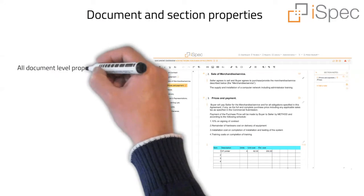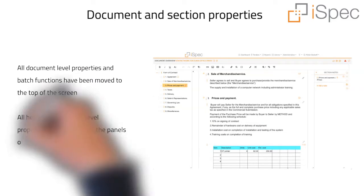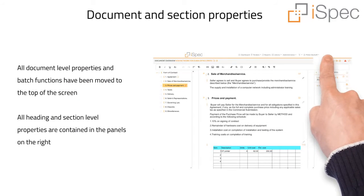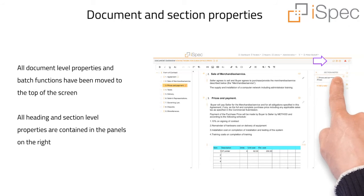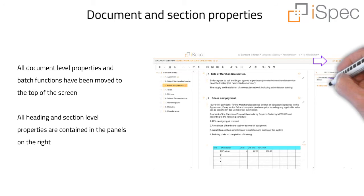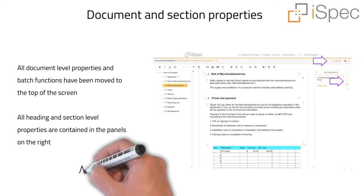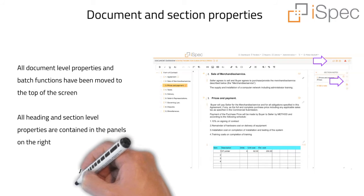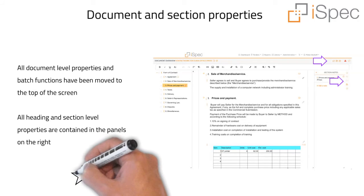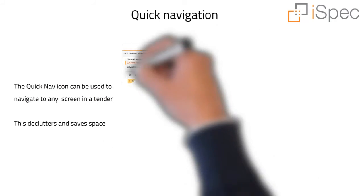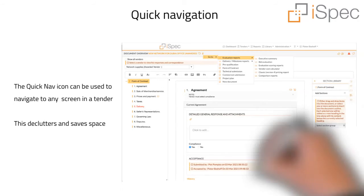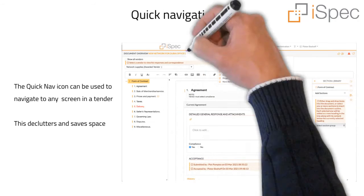All document level properties and batch functions have been moved to the top of the screen. All heading and section level properties are contained in the panels on the right. The quick nav icon can now be used to instantly navigate to and from any screen in a tender.